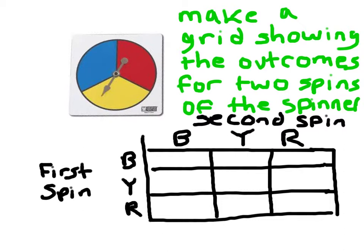So all we need to do now is just to fill in our grid as to where it intersects. Notice again that this is first spin this time, and this is second spin. So it goes this first, and then this. So that first is blue then blue, then it goes blue then yellow, blue then red.